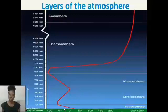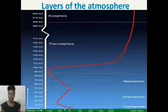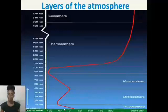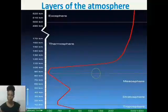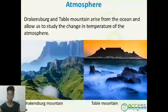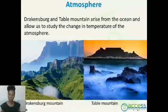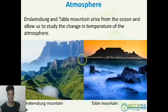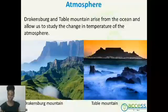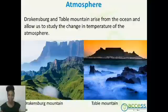The fourth layer, which extends to about 500 kilometers above the Earth's surface, is the thermosphere. The thermosphere has a temperature of about 1,750 degrees Celsius, and within this layer there is very thin air. The outermost layer is the exosphere, where we find satellites. In South Africa, we have very beautiful mountains such as the Drakensberg Mountain and Table Mountain, which arise from the ocean and allow us to study the change in temperature of the atmosphere.